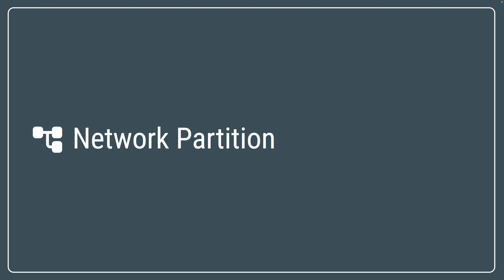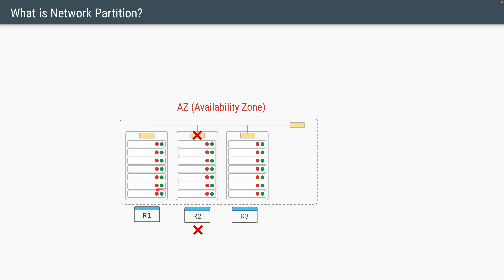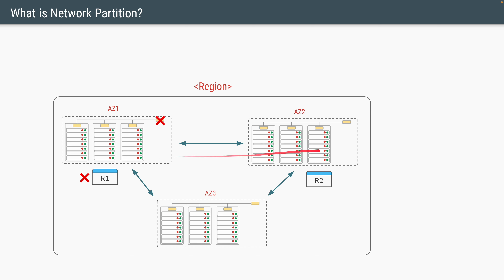Now let's apply that knowledge of replica location to the concept of network partition. If all three replicas in a partition are stored in a single rack and the network switch of the rack goes down, then all three replicas will not be reachable from outside, and replicas R1, R2, R3 will not be able to talk to each other. If the replicas are stored across multiple racks but within the same data center, and a single switch goes down, then that particular replica will not be reachable.